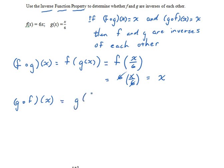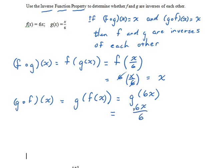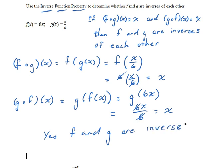Let's try the composition in the other direction: g of f of x. What does f of x do to anything it sees? It multiplies it by 6, so we get g of 6x. In turn, g divides anything that it sees by 6, so it takes 6x and divides by 6. The 6's cancel and we get x. So yes, f and g are inverses of each other — what one does, the other undoes.